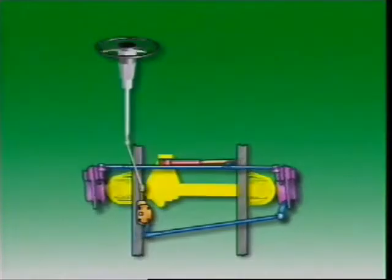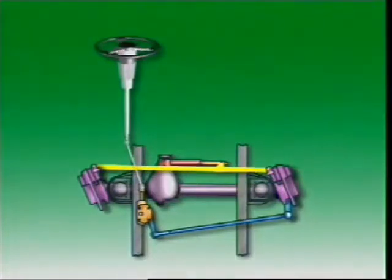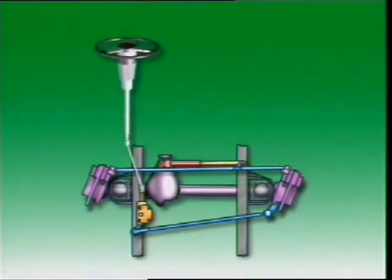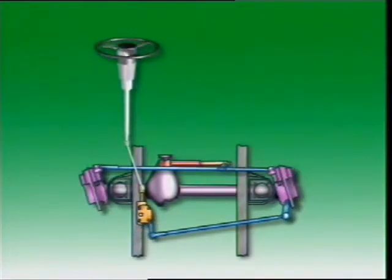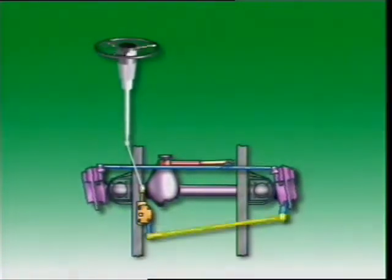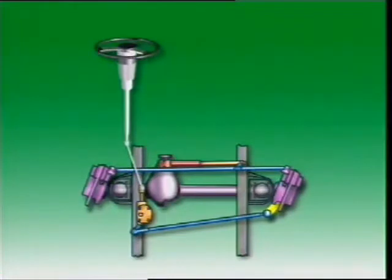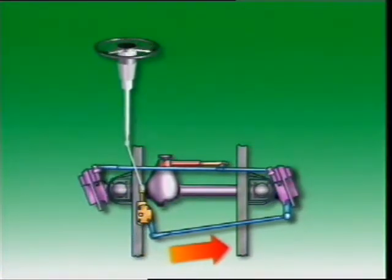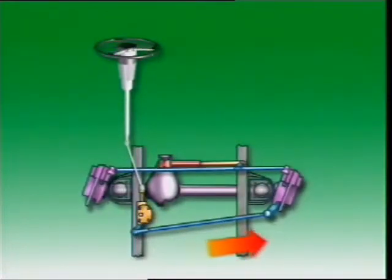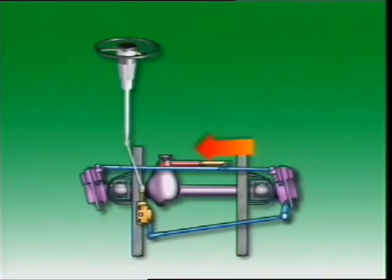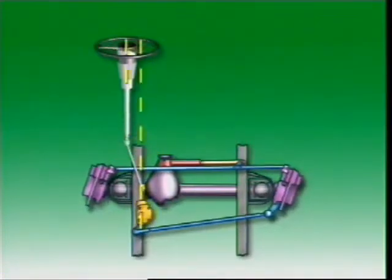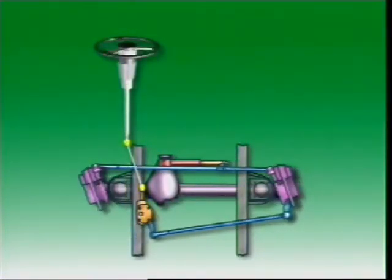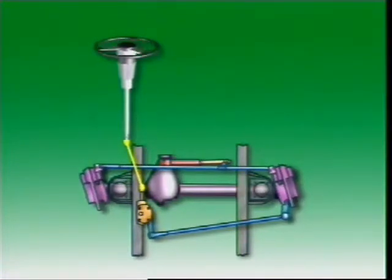In four-wheel drive vehicles with a beam axle, the single track rod connects the steering arms on each wheel assembly across the vehicle. In this design, the drag link is connected to an arm on the front of the left-hand wheel assembly. Movement of the pitman arm is transferred through the drag link to the left-hand wheel and through the track rod to the right-hand wheel. The steering box is offset from the steering column, so two universal joints and an intermediate steering shaft are used.